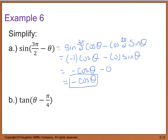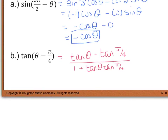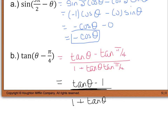Now with tangent, we use our tangent difference formula. We're given tan theta minus tangent of pi over 4 divided by 1 plus tangent of theta times tangent of pi over 4. Reducing this, tangent of pi over 4 is 1, so we get tangent theta minus 1 divided by 1 plus tan theta, and that is our final answer.